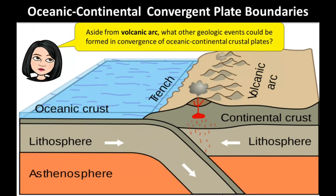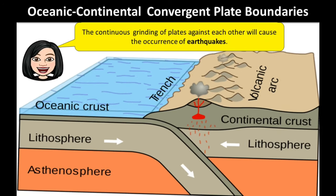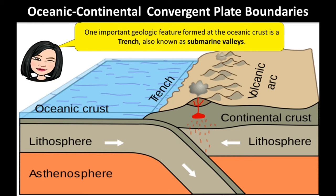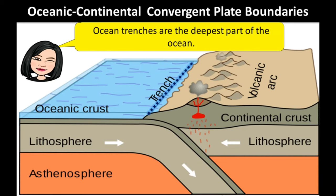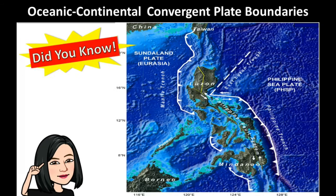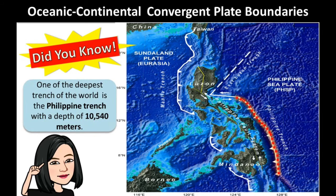This allows the magma to rise and reach the edge of the continental crust plate, forming a volcanic arc. Aside from volcanic arc, the continuous grinding of plates against each other will cause the occurrence of earthquakes. One important geologic feature formed at the oceanic crust is a trench, also known as submarine valleys. Ocean trenches are the deepest part of the ocean. Did you know? One of the deepest trenches in the world is the Philippine Trench, with a depth of 10,540 meters.